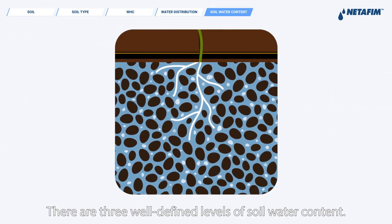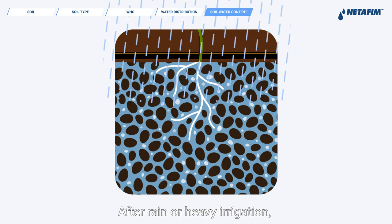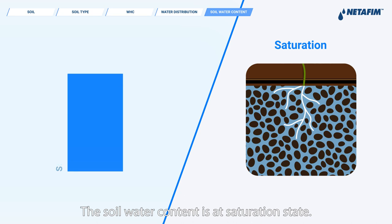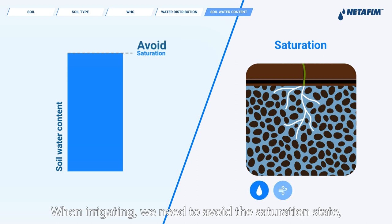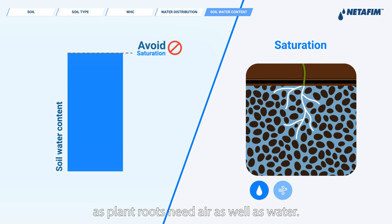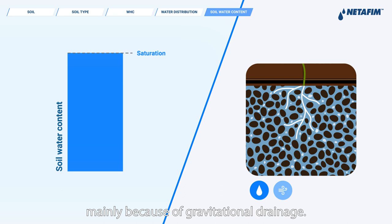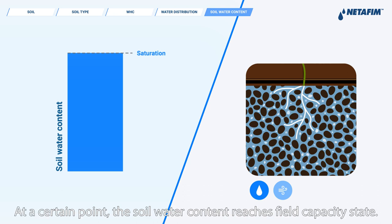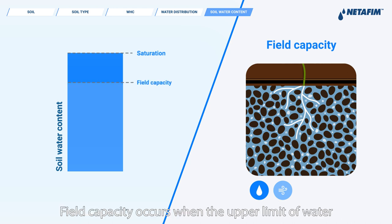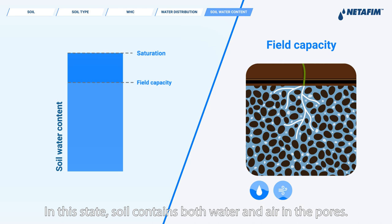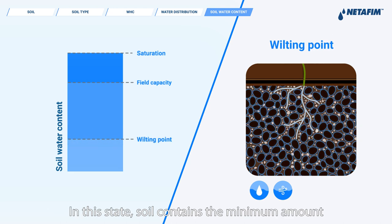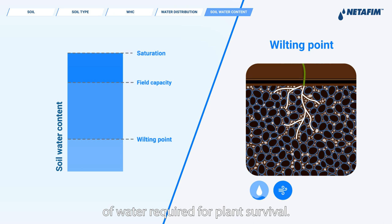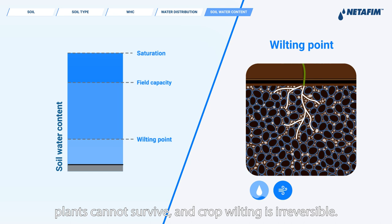There are three well-defined levels of soil water content. After rain or heavy irrigation, the soil becomes saturated — the soil water content is at saturation state, when all pores are filled with water. When irrigating, we need to avoid saturation, as plant roots need air as well as water. Soil water content then decreases mainly due to gravitational drainage until it reaches field capacity — the upper limit of water the soil can hold after drainage — where soil contains both water and air in the pores. As soil water content continues decreasing mostly from plant consumption, it reaches wilting point, the minimum amount of water required for plant survival. Below wilting point, plants cannot survive and crop wilting is irreversible.